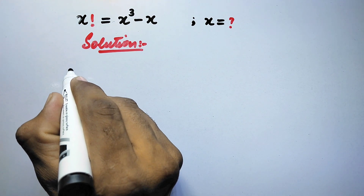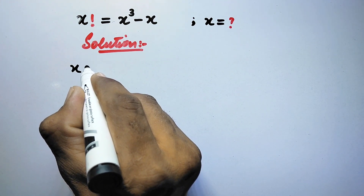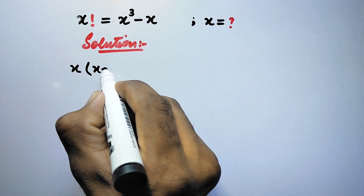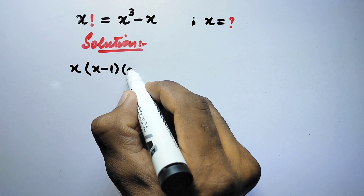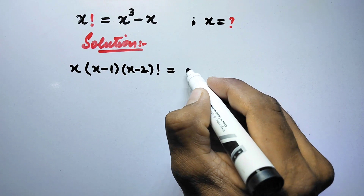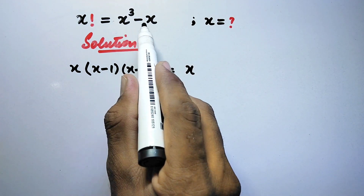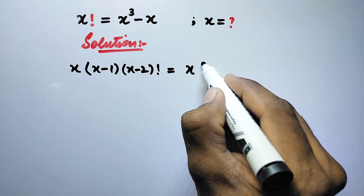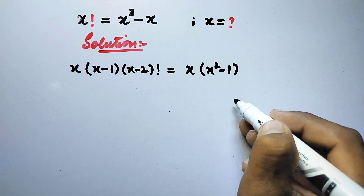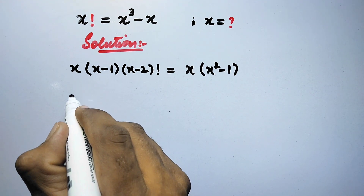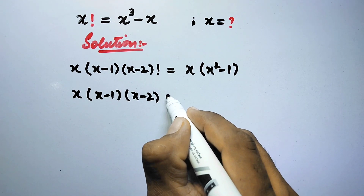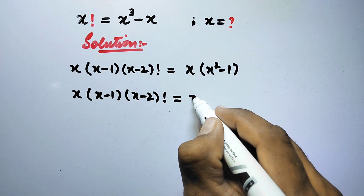In the first step, we will write x factorial as x times (x minus 1) times (x minus 2) factorial, which is equal to x cubed minus x. From here, we can take x as common on the right side, so x cubed divided by x equals x squared, and x divided by x equals 1. So now we have x times (x minus 1) times (x minus 2) factorial equal to x times...